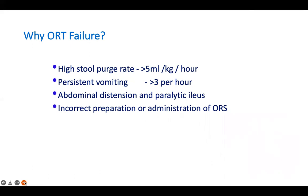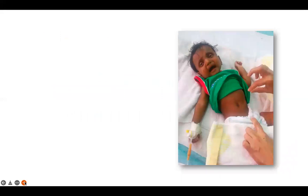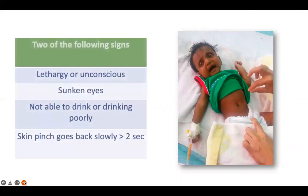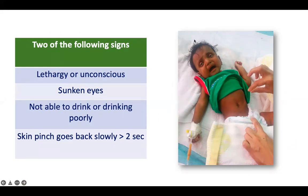In the image shown, the child looks lethargic, eyes are deeply sunken, and you can still see the skin pinch in the photo — meaning the skin pinch is going back slowly, taking more than two seconds. The child is not thirsty at all and is unable to drink. All of this indicates severe dehydration, which occurs when more than 10% of fluid is lost.